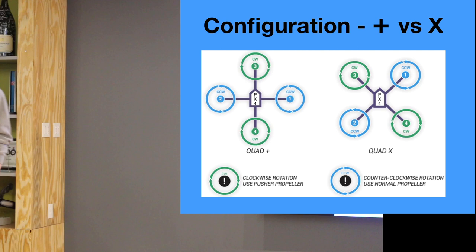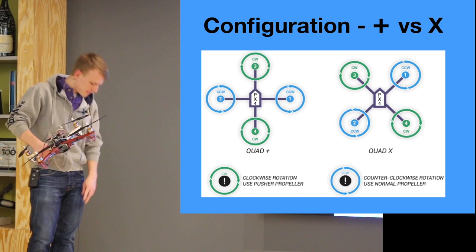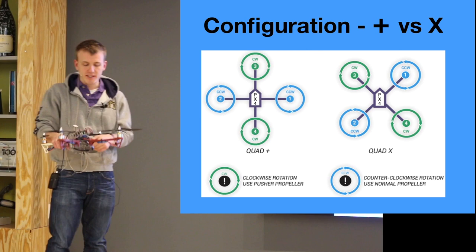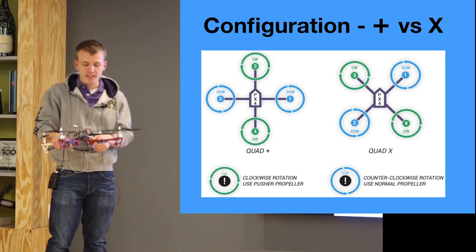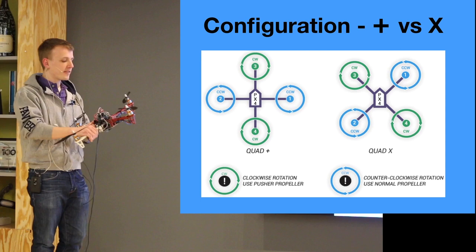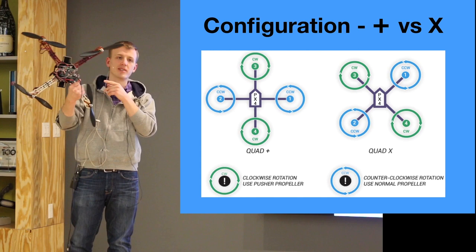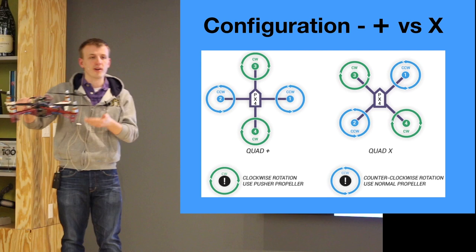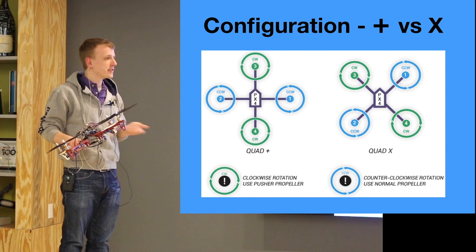Now let's get into how the quadcopter maneuvers itself and some of the physics behind it. When building your quadcopter, one of the first things to decide is whether you want a plus or an X configuration. The main difference is basically what is the front of the craft. I've chosen the X configuration, so the front of my craft is represented by the red arms — I can always tell which way my controls will work from a distance. There's really no difference between the configurations; it's personal preference. I think the X looks a little bit cooler.